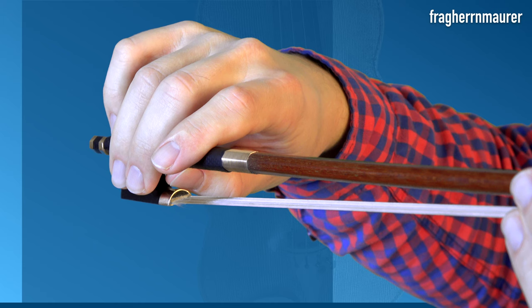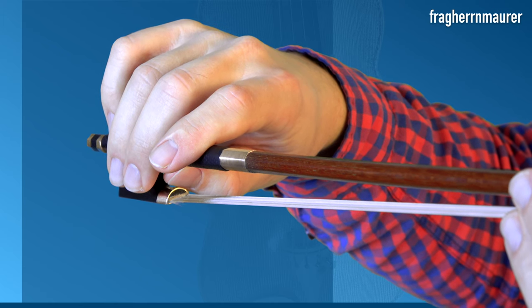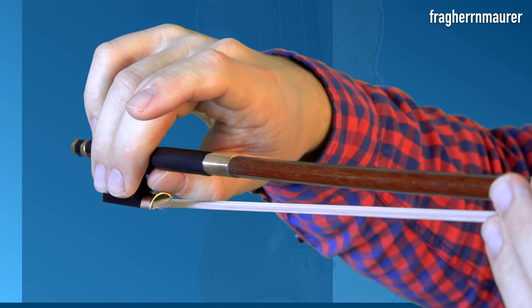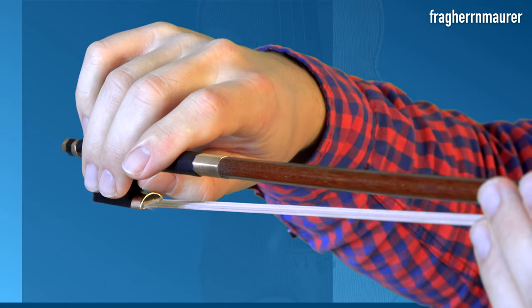Now set your first finger onto the stick at a slight distance to your second finger, make sure it touches at the second joint. And there it is, the basic grip of the bow.